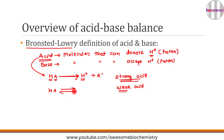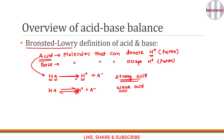For weak acids, forward and reverse reactions occur simultaneously. The reversible arrow indicates that the acid has a weak tendency to donate H⁺, and there is a dynamic equilibrium between HA, H⁺, and A⁻.